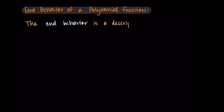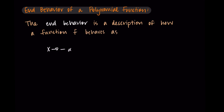The end behavior is a description of how a function f behaves as we go to the edges of the graph for the inputs. This is going to look like as x goes to negative infinity and as x goes to positive infinity. So our end behavior is a description of what happens at these ends of the function — how the graph behaves as our inputs get extremely negative or extremely positive.